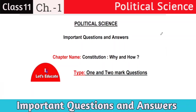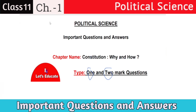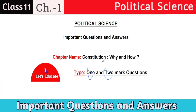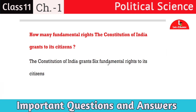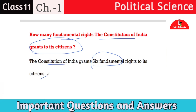Today in this class I shall discuss some one and two mark textual question and answers, as well as important questions from the chapter 'Constitution: Why and How' — a chapter of Political Science for HS first year. Our first question: how many fundamental rights does the constitution of India grant to its citizens? The constitution of India grants six fundamental rights to its citizens.